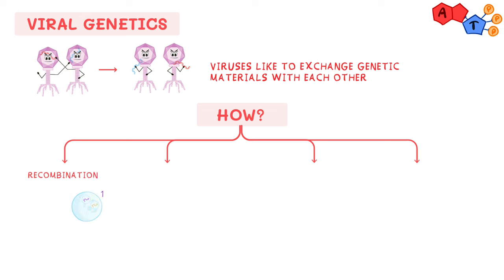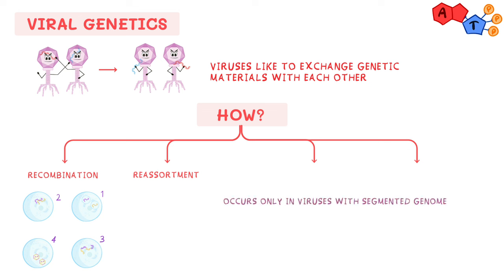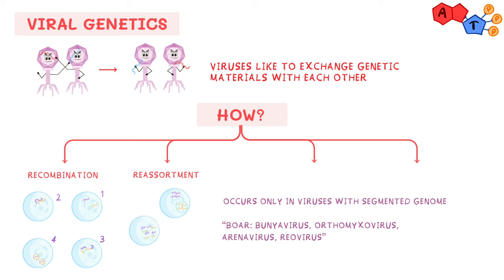The first way viruses exchange genetic material is recombination. Here, two viruses enter a cell and release their genetic material, which can then be exchanged between the two viruses. The second way is reassortment, which occurs only in viruses with a segmented genome. The mnemonic for these viruses is BORR: B for Bunyavirus, O for Orthomyxovirus, A for Arenavirus, and R for Reovirus. Genetic material is exchanged between two virions, and note that in reassortment, the exchange occurs within the same species of virus.